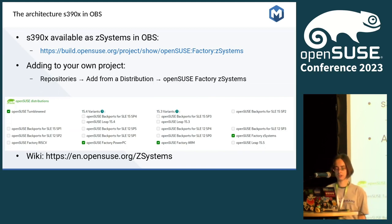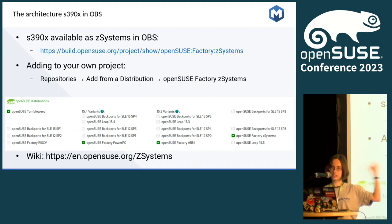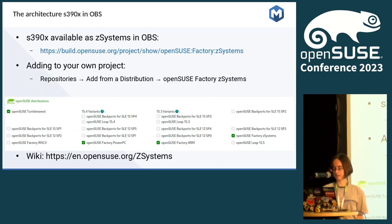Then you can build your projects for openSUSE Factory Z Systems and receive an overview of whether it can be built or not. We have also got ISO images for Z Systems, OpenQA stuff, and everything else. That is the path how you as a packager and developer can test it.